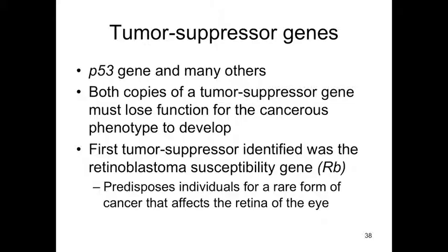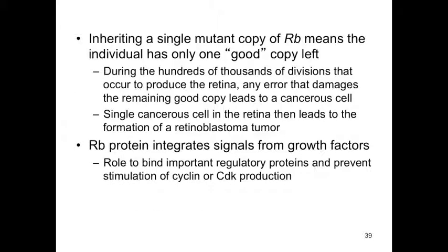The first tumor suppressor gene identified was the retinoblastoma susceptibility gene, which predisposes individuals to a rare cancer affecting the retina. If you inherit a single mutant copy of the RB gene, the individual only has one good copy left. During the hundreds of thousands of divisions that occur to produce the retina, any error that damages the remaining good copy will lead to a cancerous cell. This is called the two-hit hypothesis. The RB protein integrates signals from growth factors and is important in binding regulatory proteins and preventing stimulation of cyclin or CDK production, thereby controlling the cell cycle.